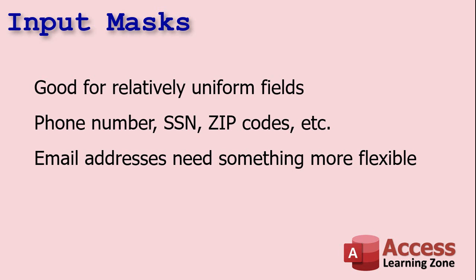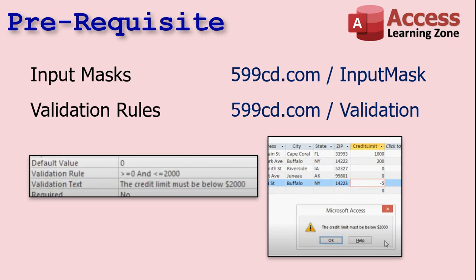What you want to use is a validation rule. I've got a whole other video on how to use validation rules — I'll put a link down below. You can set up validation rules in your tables. For example, you could say the credit limit must be below $2,000 — greater than or equal to zero and less than $2,000. If the user enters something like negative five, they get a warning. That's more along the lines of what we're going to use to validate email addresses. Go watch both of those videos if you've never used input masks or validation rules, then come back and I'll show you some cool stuff.